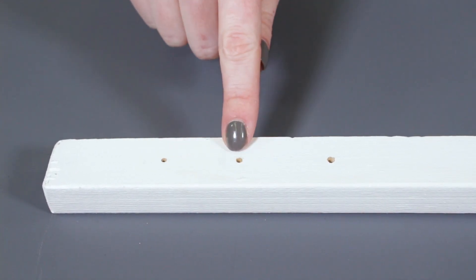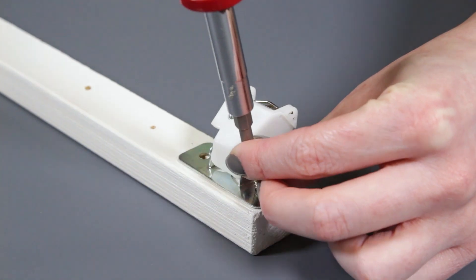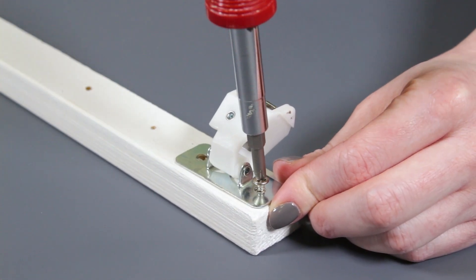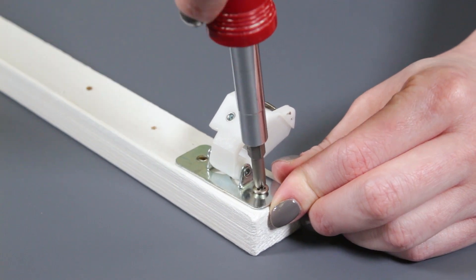Drill pilot holes at each of the marks and screw the cord lock in place. You can use any screws of an appropriate length for your project as long as the head is larger than the holes on the cord lock base.